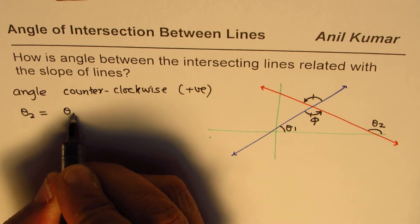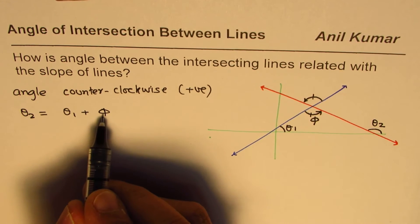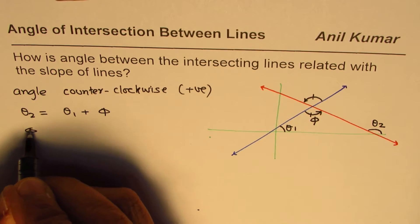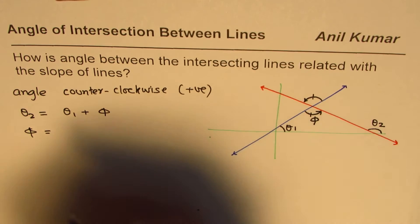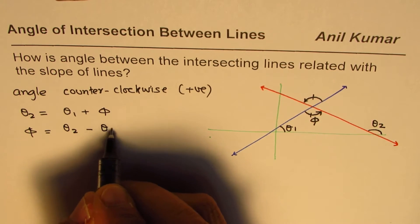So theta 2 is theta 1 plus the angle between these two lines and from here you can find what the angle is. So phi, the angle between two lines, is difference of these two angles, theta 2 minus theta 1.